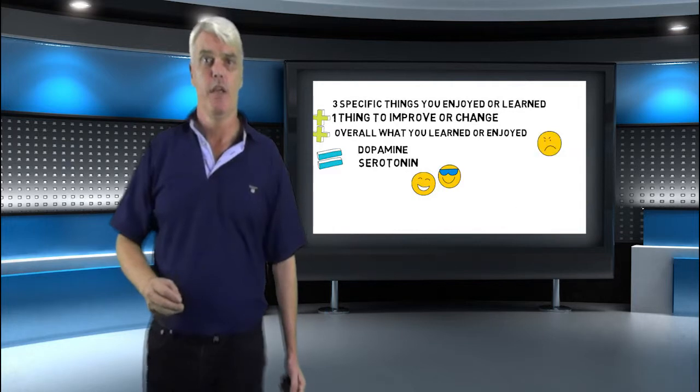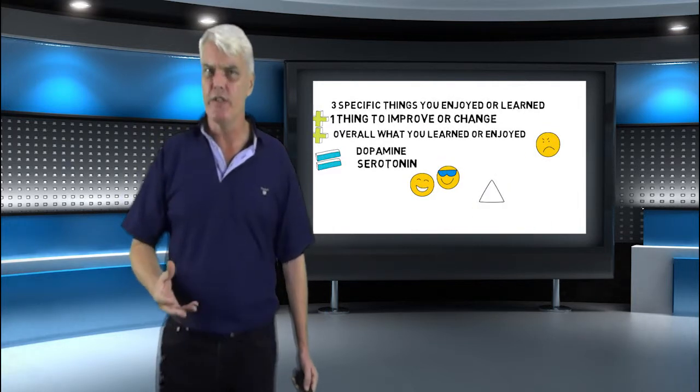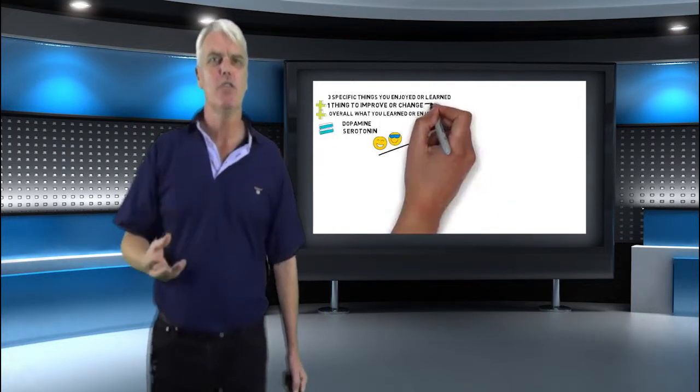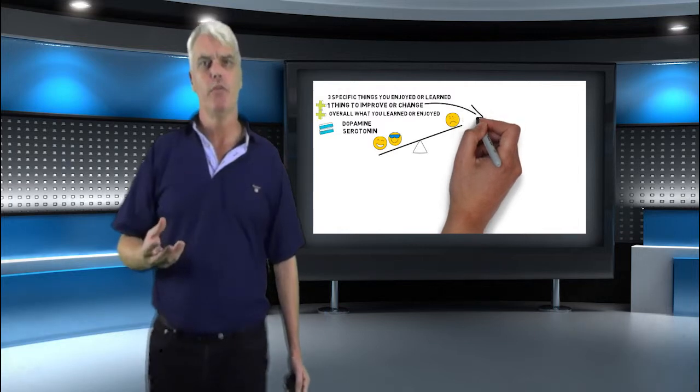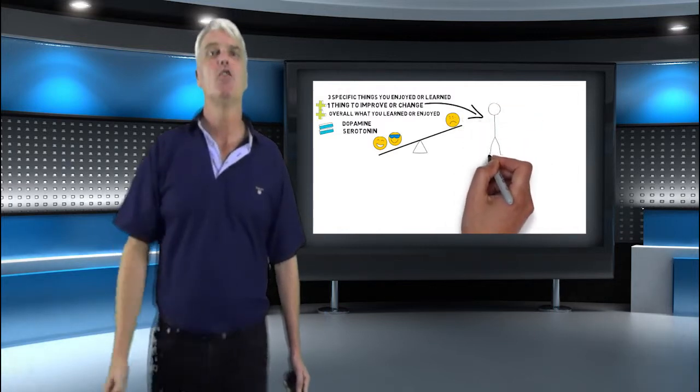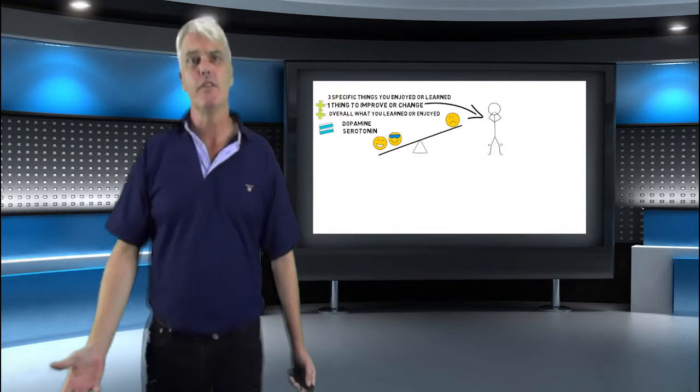These are your happy chemicals, counteracting any cortisol triggered by the implicit criticism of something to improve. This criticism is perceived by your amygdala as a threat.